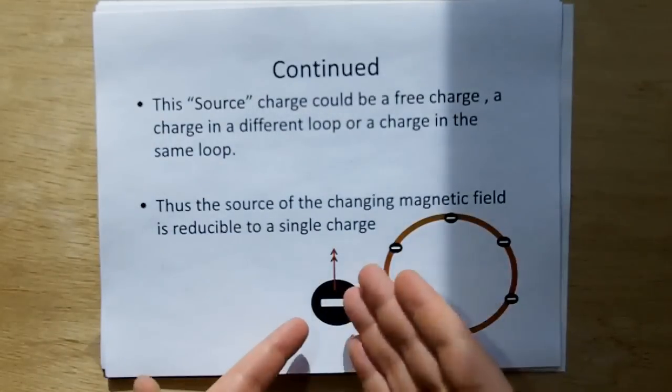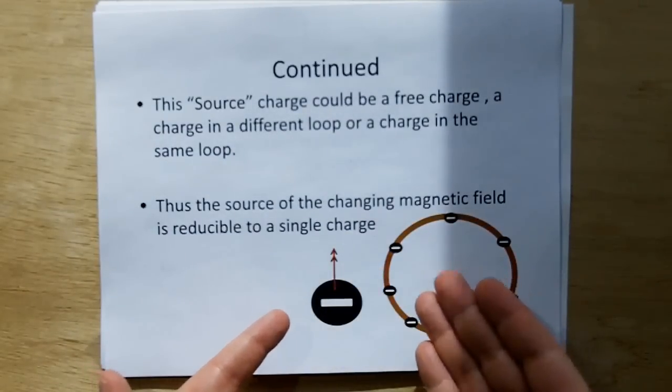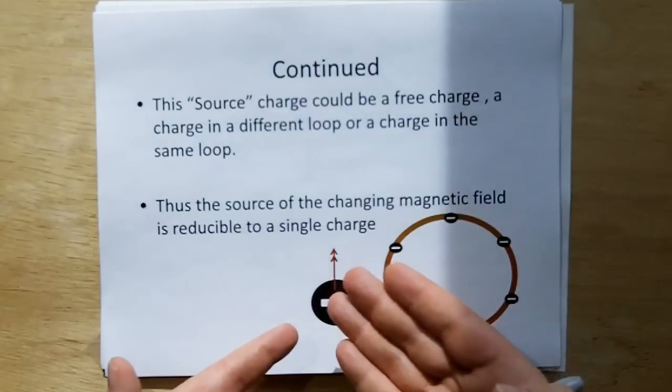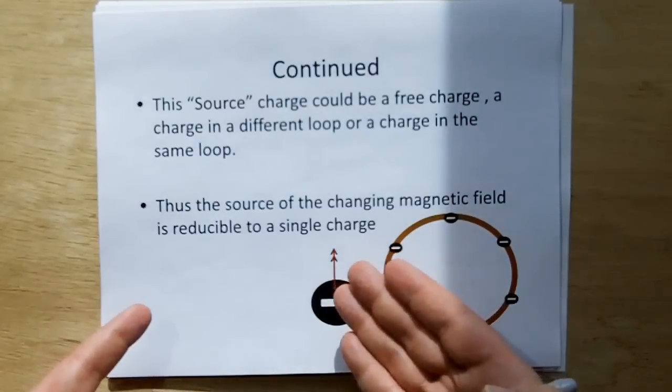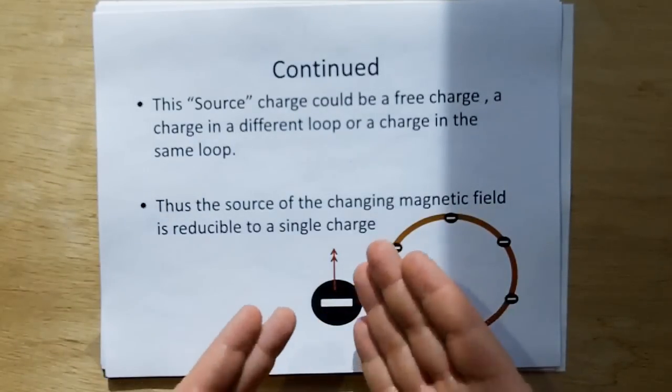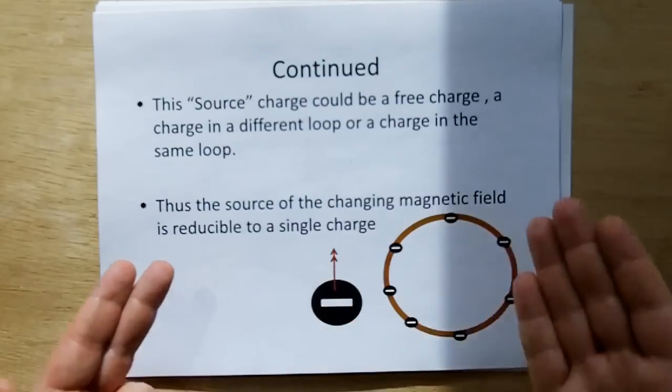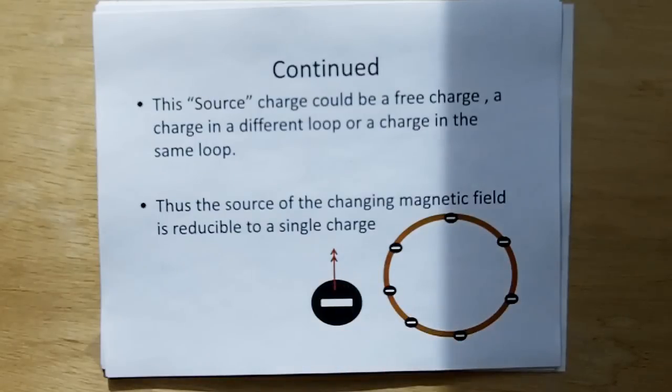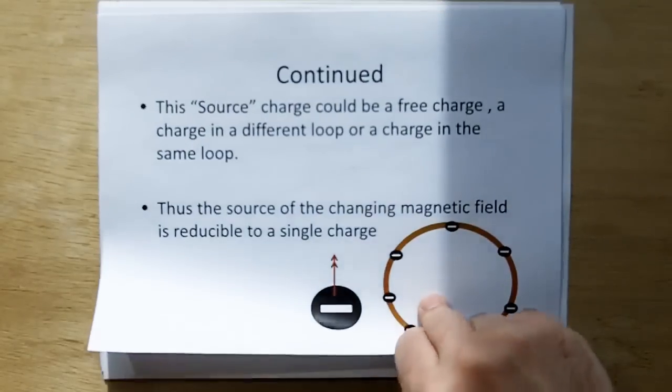So here we have the source of the magnetic field. It can be expressed as a point charge. And this point charge could be part of another loop, or it could be part of an open loop. It didn't matter. So the source of what causes induction is no problem. It can be reduced to a point charge.